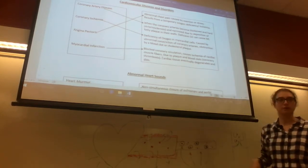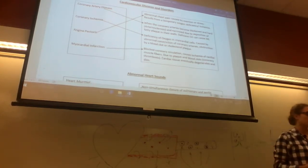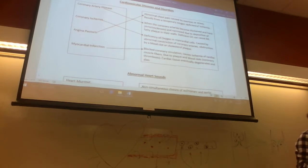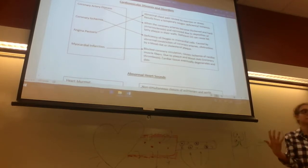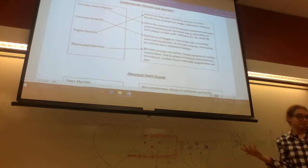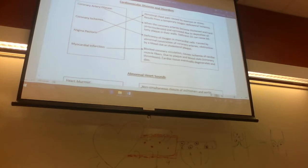MI means myocardial infarction, which also means heart attack. If you have thick, narrowed arteries, you're not getting enough blood flow and not enough oxygen — so you have a heart attack. Coronary ischemia means deficient oxygen. Ischemia means low oxygen. This is when your myocardial cells — the muscular cells in your heart — aren't getting enough oxygen.